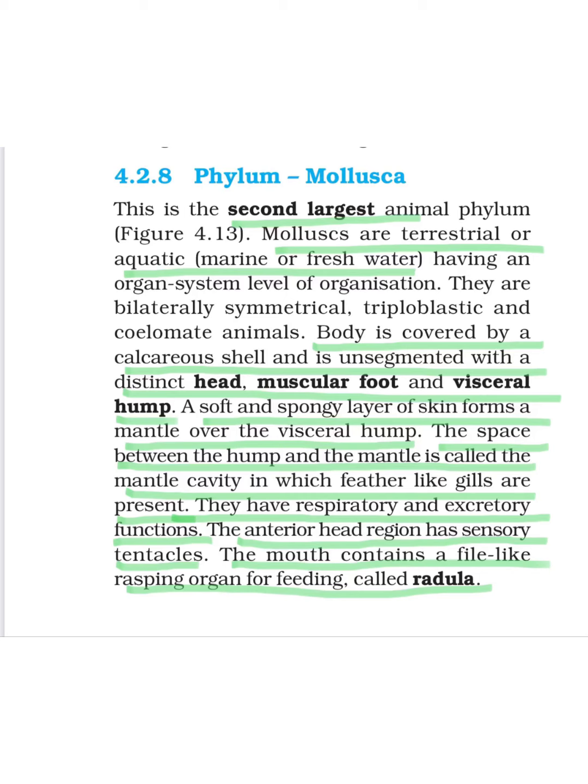Next phylum — we are starting with Mollusca. It is the second largest animal phylum after Arthropoda. Mollusks are mostly found either on terrestrial land or in aquatic habitats — some in marine water, that is seawater, and some in freshwater. They have organ system level of organization, are bilaterally symmetrical, triploblastic, and coelomate. These common points will come in every phylum onwards.